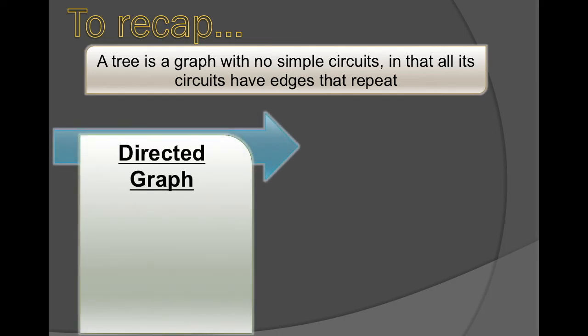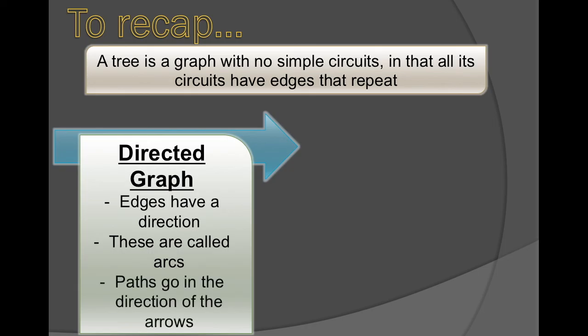We then learned about what a directed graph is. These are edges that have direction. And if the edges have direction, we now call them arcs. Paths need to go into the direction of those arrows.